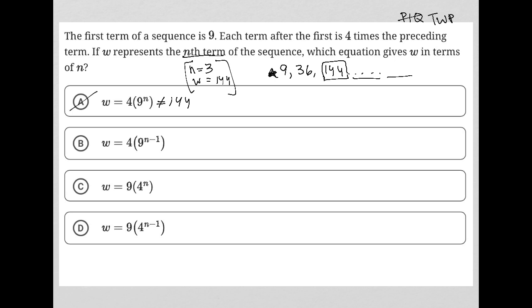How about 9? Now if I put a 3 in here, that makes it 3 minus 1, which is 2. How about 9 squared times 4? That also does not equal 144.